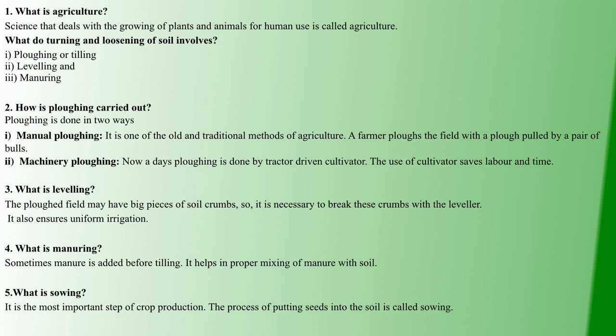What is the turning and loosening of soil? Turning and loosening of soil is the comfort of plants. How do you do this? The first method is Plowing or Tilling. Second is Leveling. Third is Manuring.